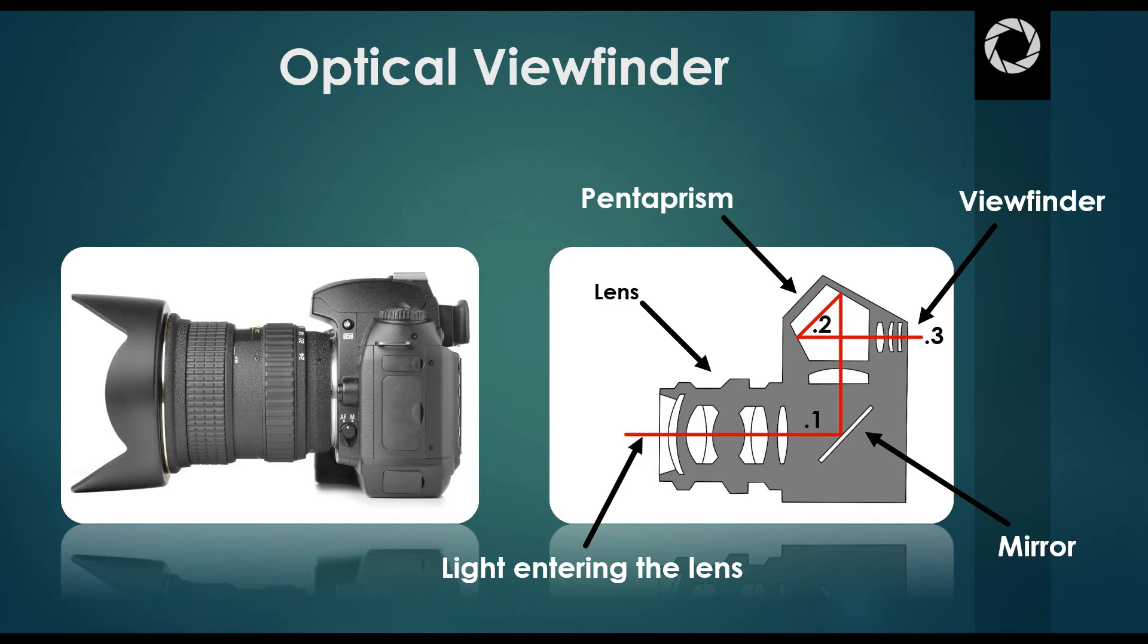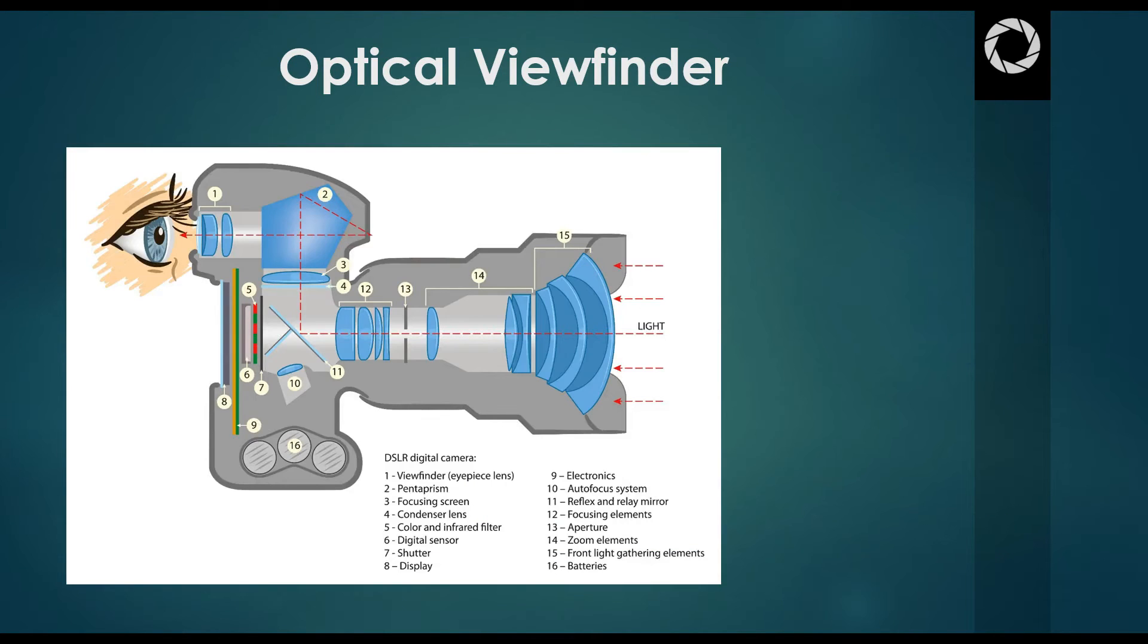This is what we call the optical viewfinder. Just to give you another view of the whole process, here we have light or the picture represented by the broken red line. It shows it entering the lens, passing through all the various glass inside the lens, hitting the mirror at the back of the camera. It is then redirected up into the pentaprism and exits where the viewer's eye is.